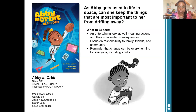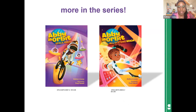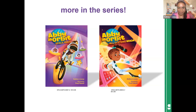There are more books in the series. We have Abbey in Orbit Space Race, which involves programming and virtual reality and how to deal with when your best friend is also friends with your best frenemy. And then Abbey in Orbit All Systems Woe is coming out September 28th. That one is based on some real life experiences I had not in space, but at one of my workplaces.